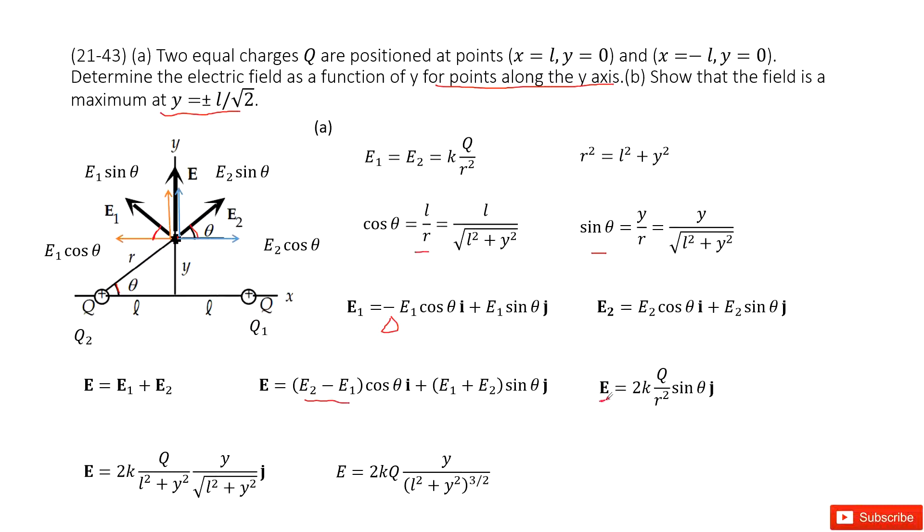So the electric field just has the y-component. The magnitude equals 2kq divided by r squared, sine theta. Then we input r squared and sine theta into the function. It can be simplified like this. The magnitude for electric field at this position can be written in this way. So part A is done.